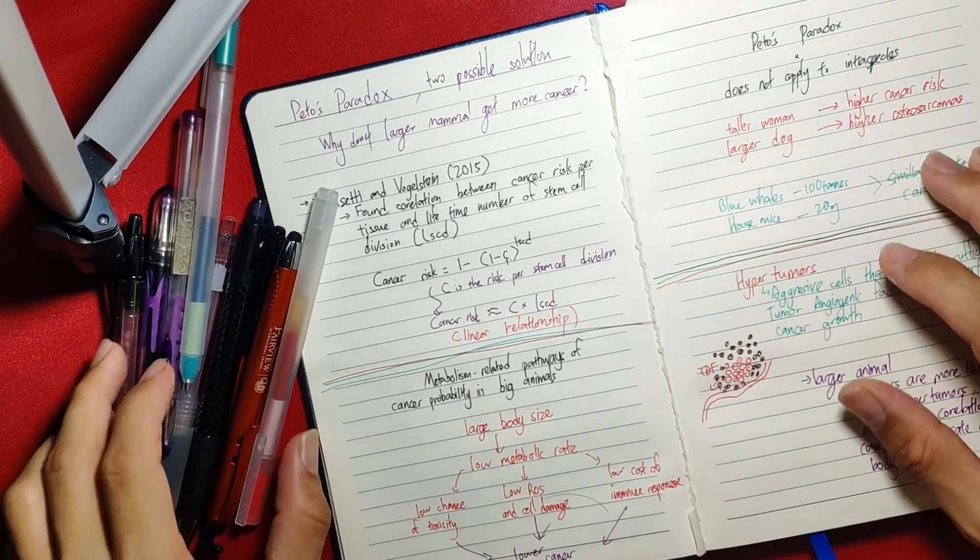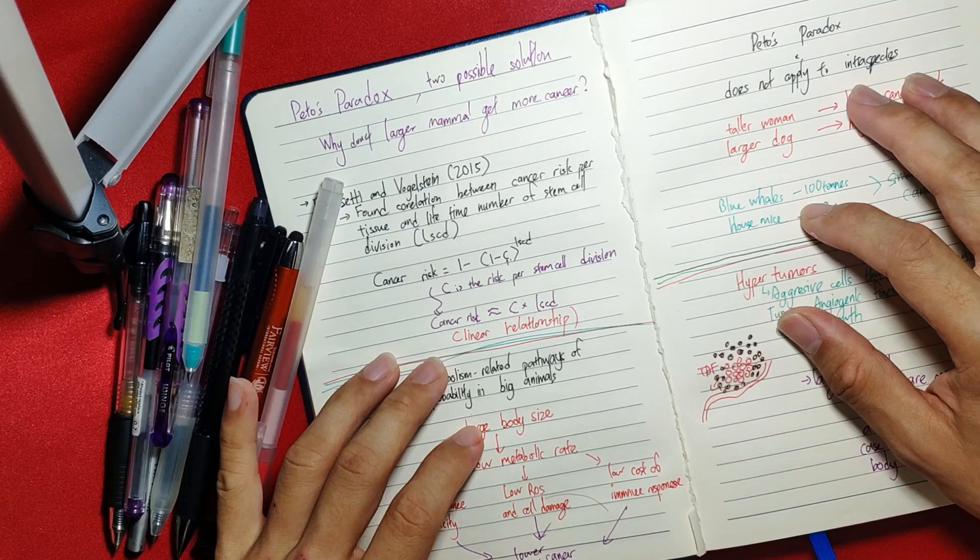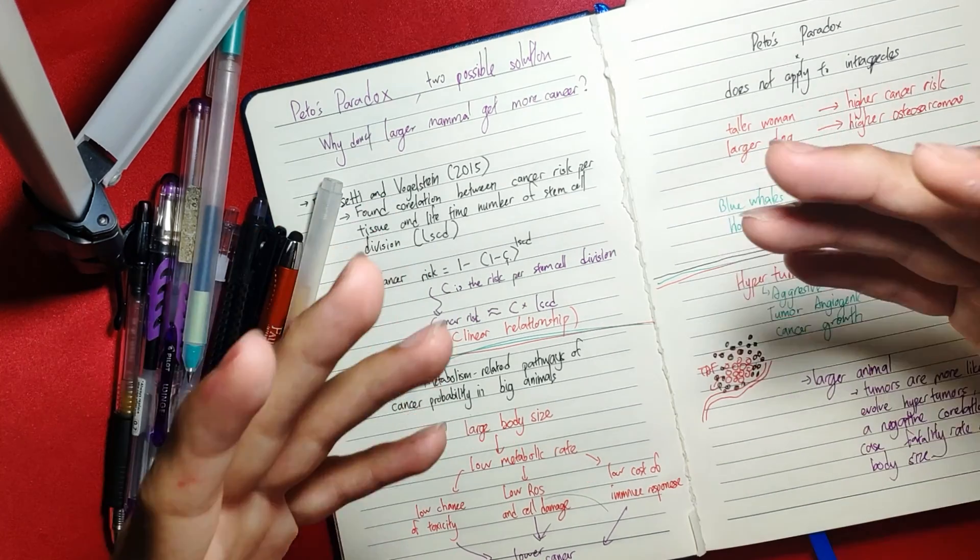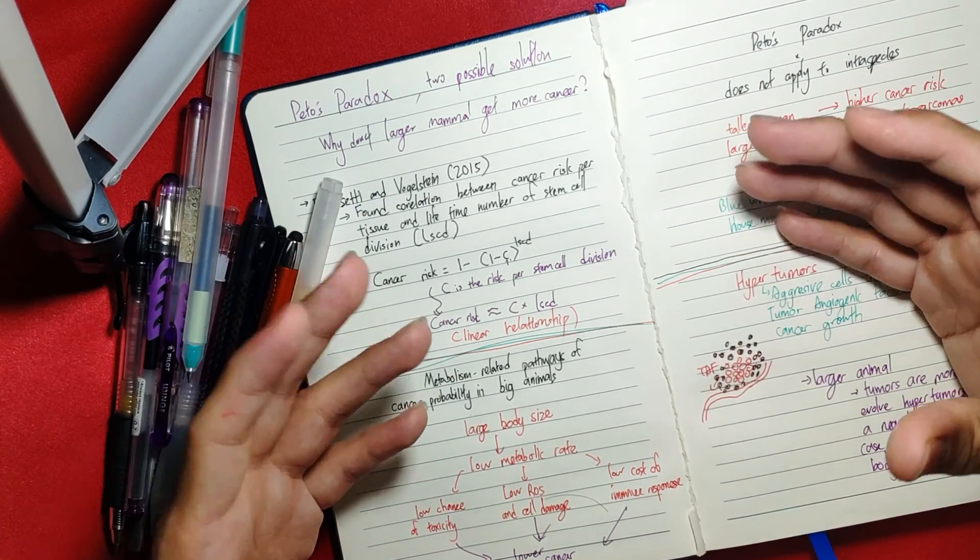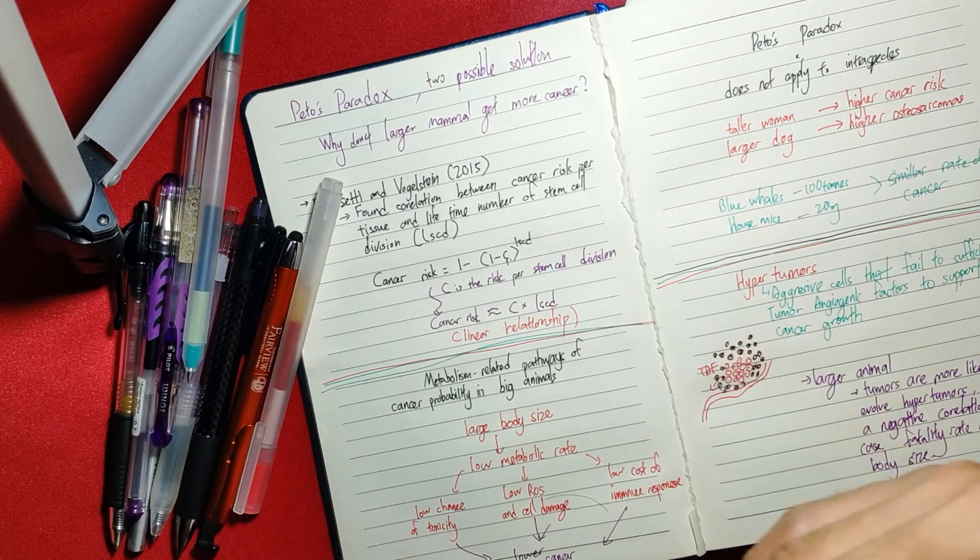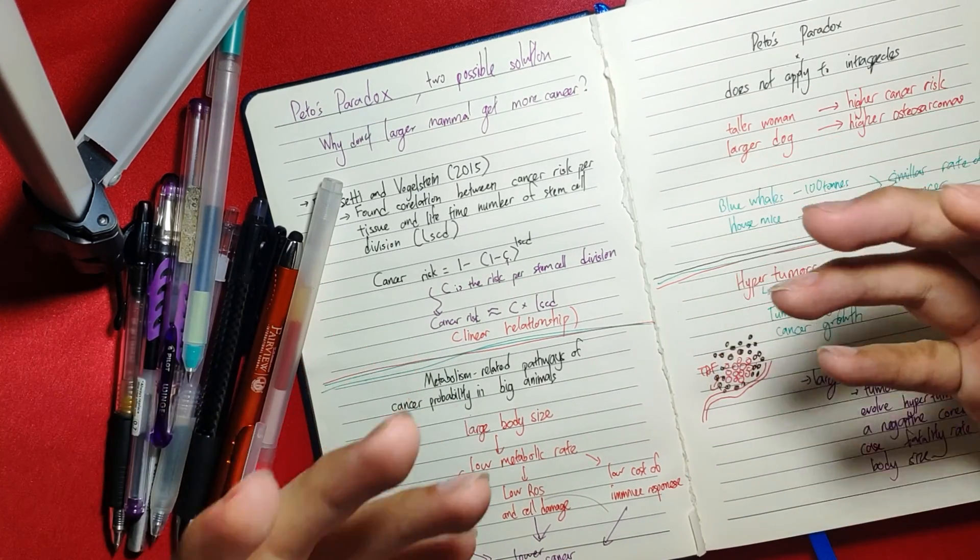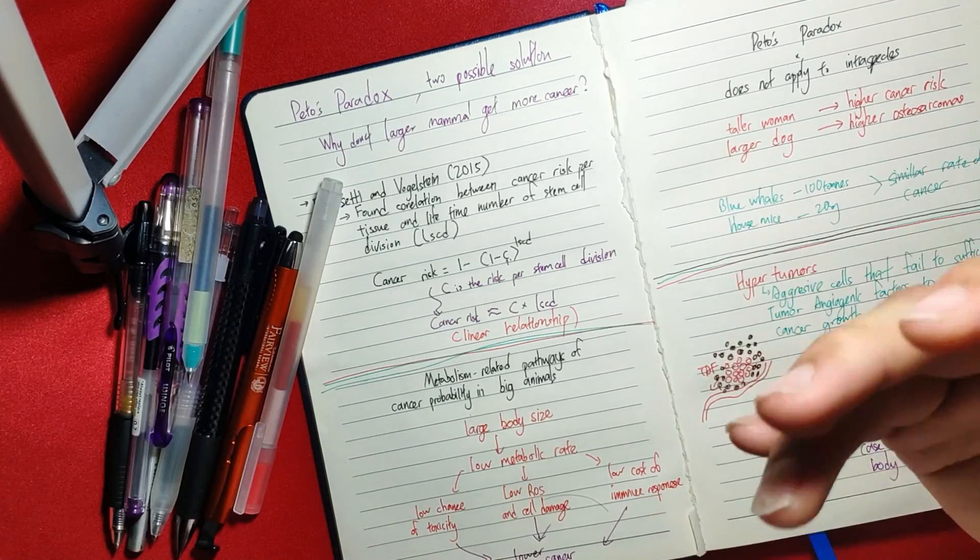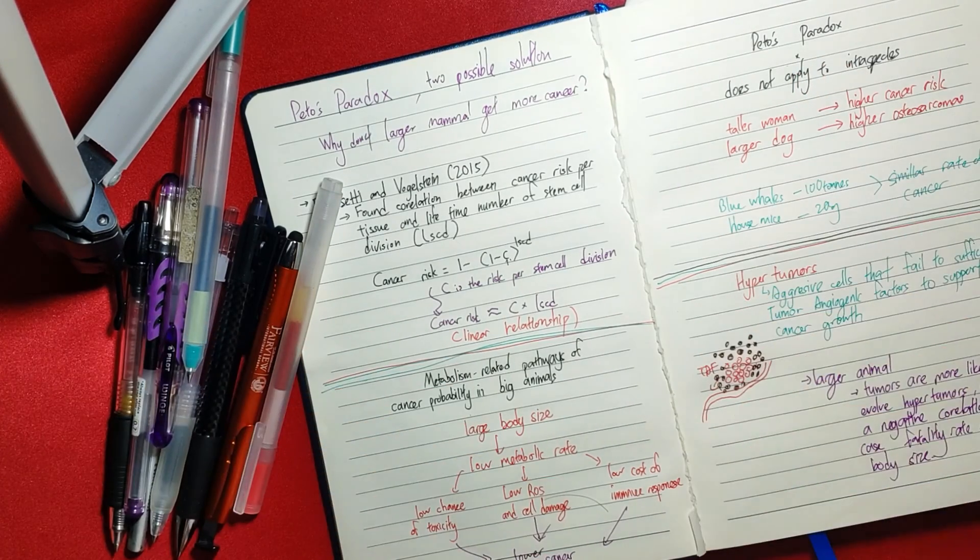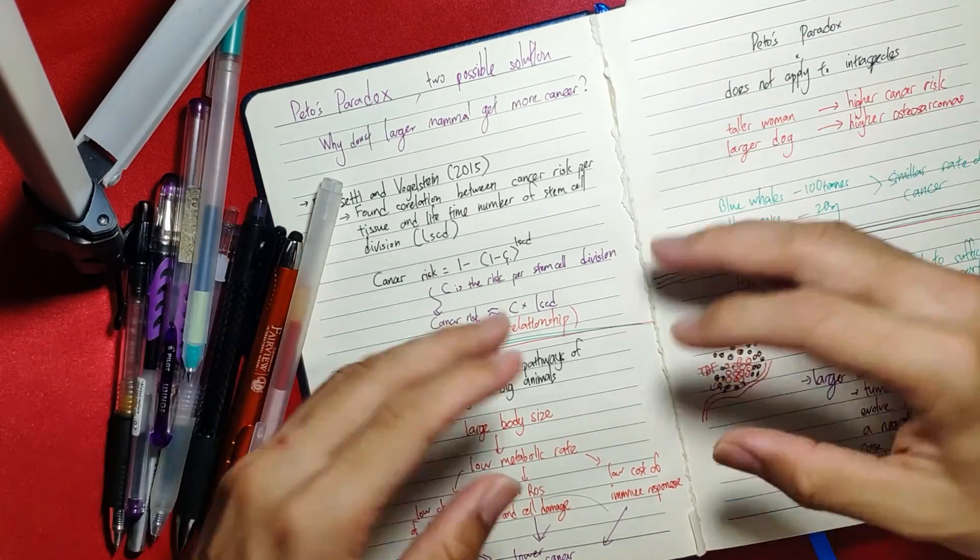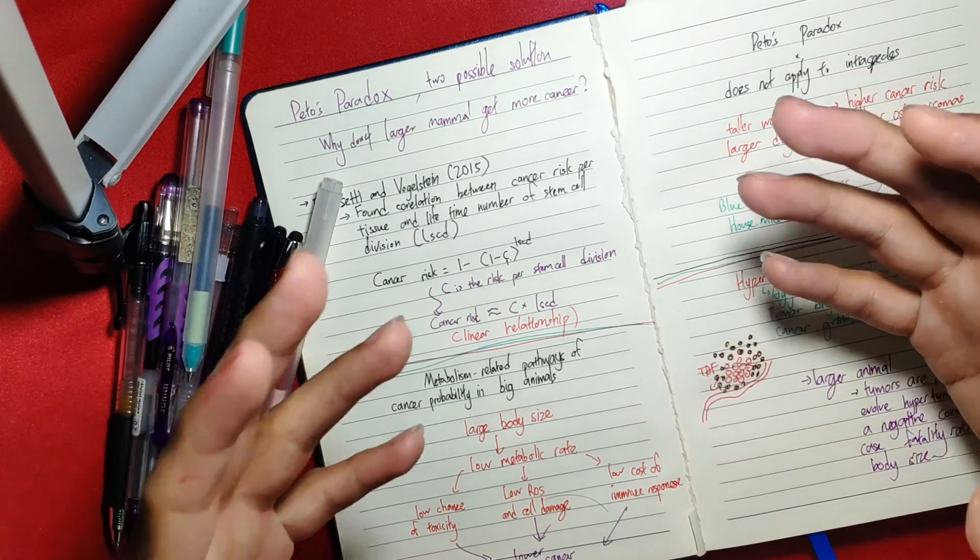Hello, good afternoon everyone. Today I'm going to talk about Peto's Paradox, which explains why larger animals don't get more cancer. The theory of cancer is that cells have mutations that don't work well anymore, so they divide out of control and become parasites.